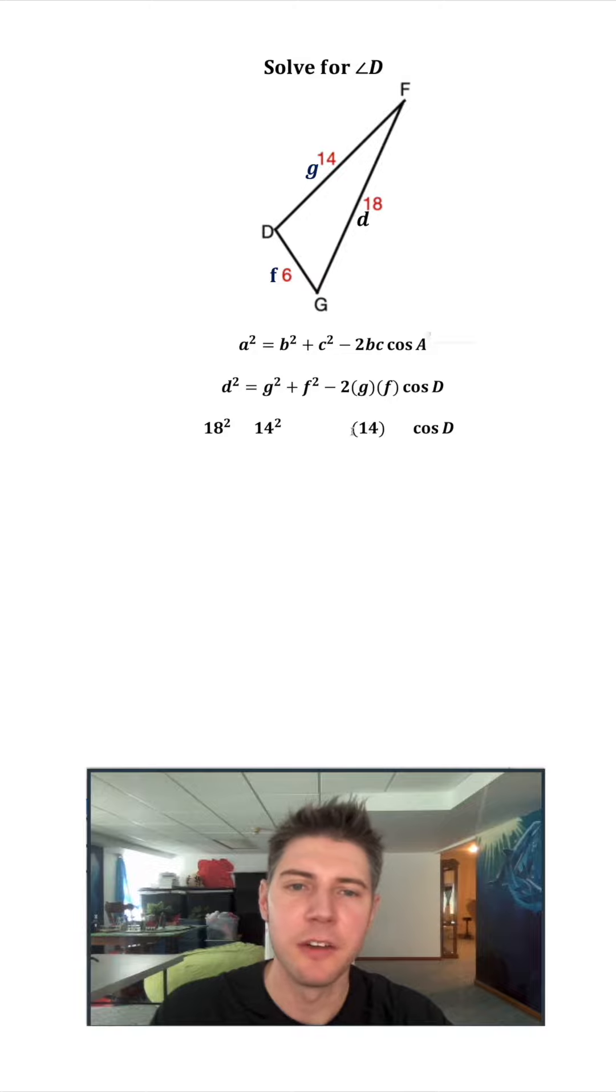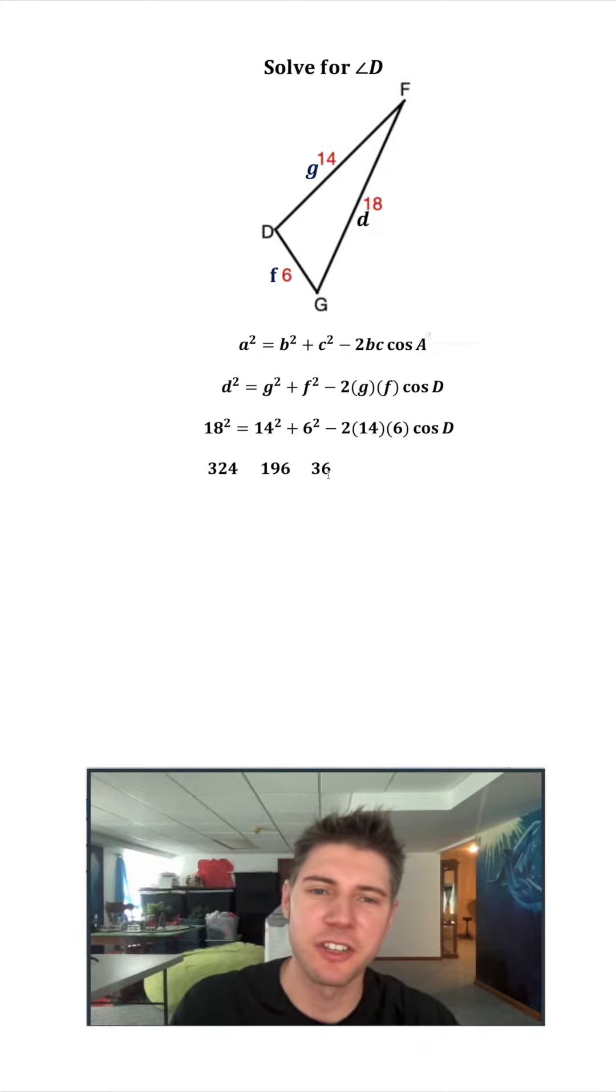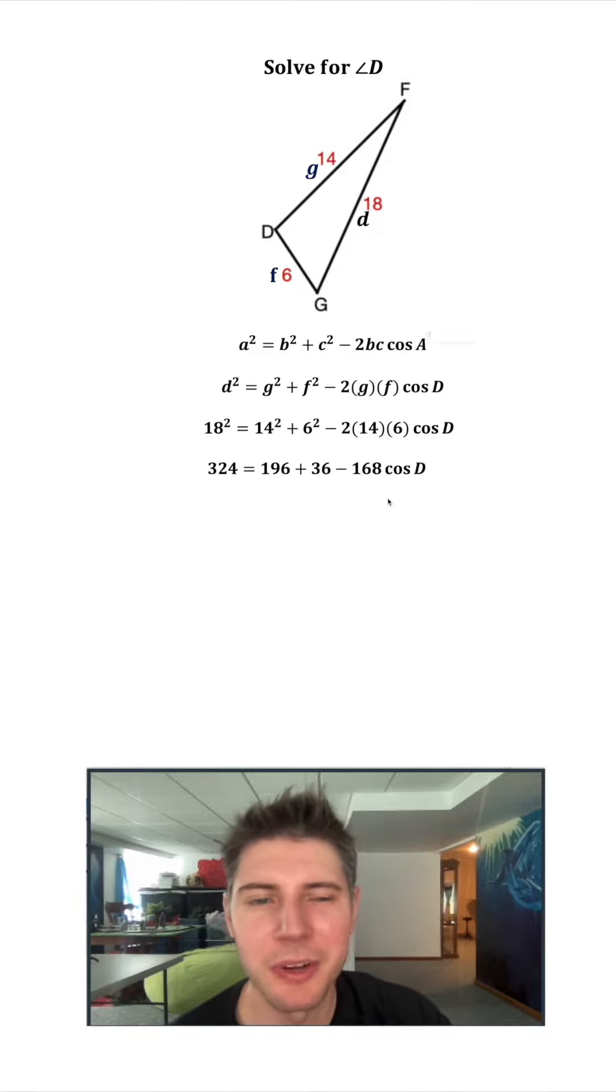We're going to plug in 18 for this D, 14 for the Gs, and 6 for the Fs. And then we'll copy down the rest of the formula. 18 squared is 324, 14 squared is 196, 6 squared is 36, and 2 times 14 times 6 is 168. And then we'll copy down the rest of the formula.